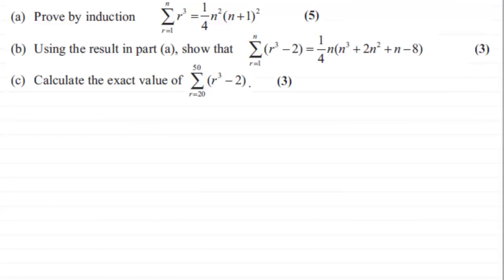Okay, welcome back if you had a go. So first of all, what I'm going to do is just copy down what we're asked to show. That is sigma of r cubed minus 2 going from r equals 1 to n.